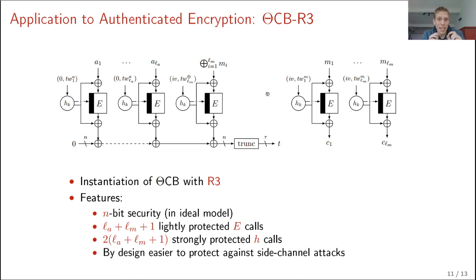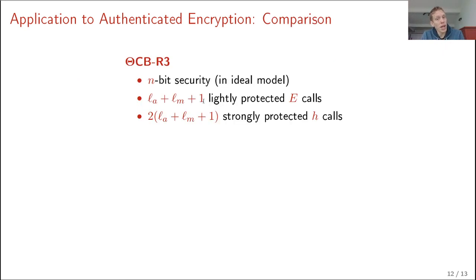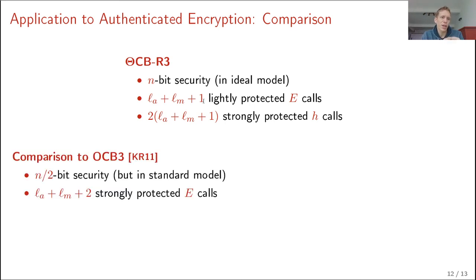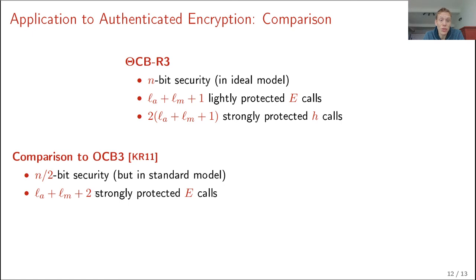It's particularly interesting to see what happens with a permutation-based scheme, where the key size to the block cipher is zero — you get birthday bound security based on a random permutation. Comparing to OCB3: OCB3 only gets birthday bound security, but this is security in the standard model. It turns out it is impossible to prove optimal security in the standard model if you base it on a tweakable block cipher — it only gets n/2-bit security in the standard model, and on the downside it requires strongly protected block cipher evaluations.